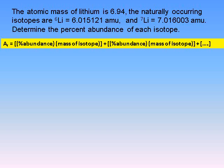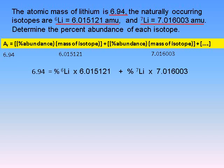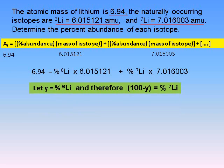This problem is a little bit different but works in a very similar way. In this case, we're given the relative atomic mass and the isotopic masses and asked to calculate the abundance for each of the isotopes. The formula we used before is written in the yellow box below. So we have 6.94 as our relative atomic mass, and we're given the isotopic masses for each isotope. What we're missing is the percentage abundance. We can work this out because we know that the abundances of all isotopes must sum to 100%. So if we let y equal the abundance of one isotope, then 100 minus y will be the abundance of the other.